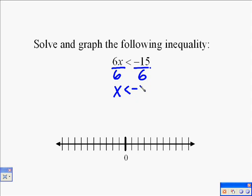6 divided by 6 on the left is 1, so it's 1x, which we just write as x. On the right side, we divide negative 15 by 6, which is the same as negative 2.5. So our answer is x less than negative 2.5.